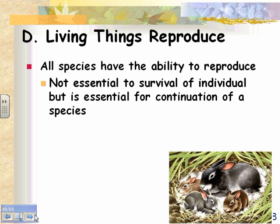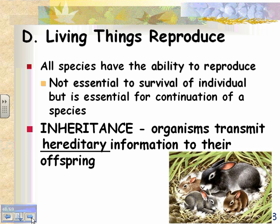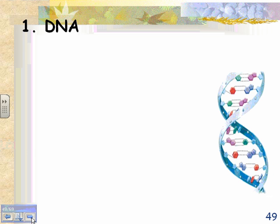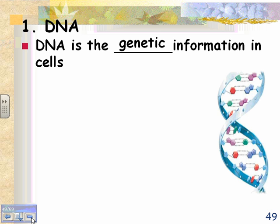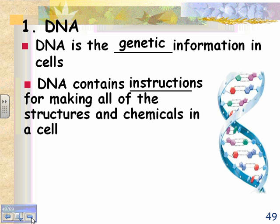Organisms transmit hereditary or genetic information to their offspring — this is called inheritance. They do that through DNA. DNA is the genetic or hereditary information in cells. DNA contains instructions for making all of the chemical structures and chemicals in the cell. We'll spend a whole unit on DNA because it's that important.